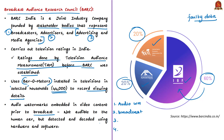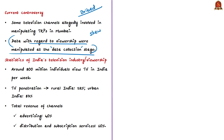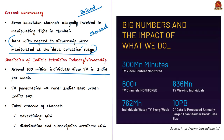Mumbai police have said that viewership data were manipulated by some channels at the data collection stage. Police claim that some households were bribed to keep their televisions focused on a particular program or channel, skewing ratings in favor of those channels. The article states that in India around 80 crore individuals view television in a week, television penetration in rural India is about 52%, while in urban India it is 87%. About 40% of total channel revenue is attributable to advertising and 60% to distribution and subscription services.